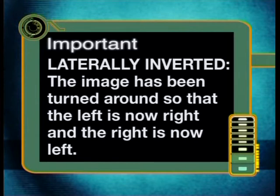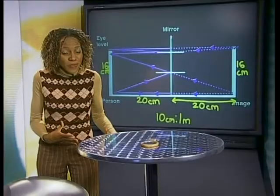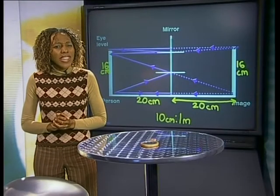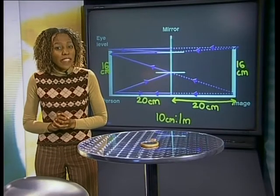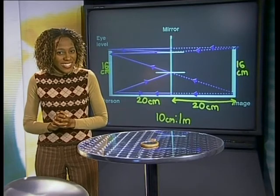We explain this by saying that the image is laterally inverted. This means that the image has been turned around, so the left is now right, and the right is now left. Can you think of a situation where it is a good thing that the image in a mirror is laterally inverted?